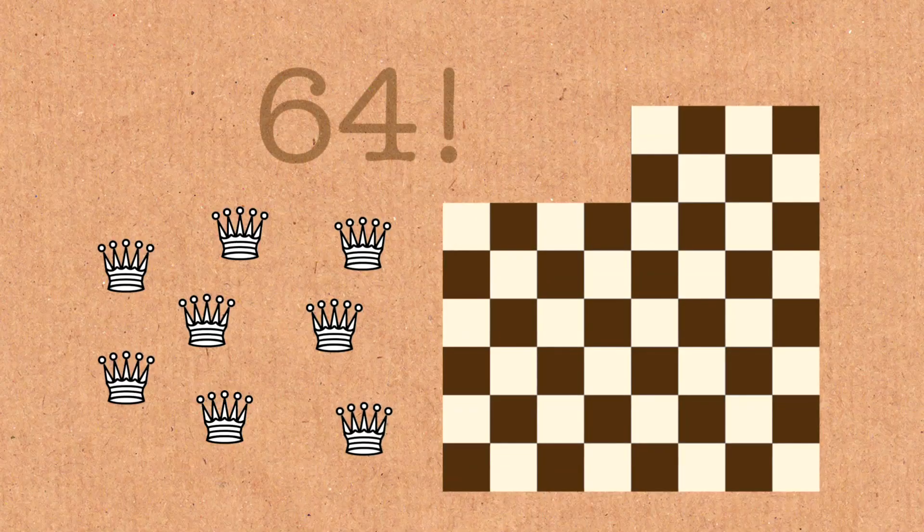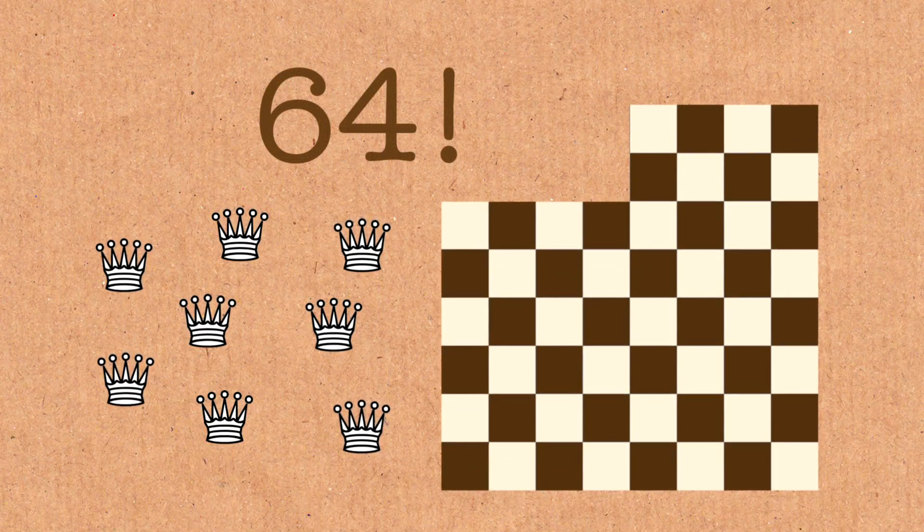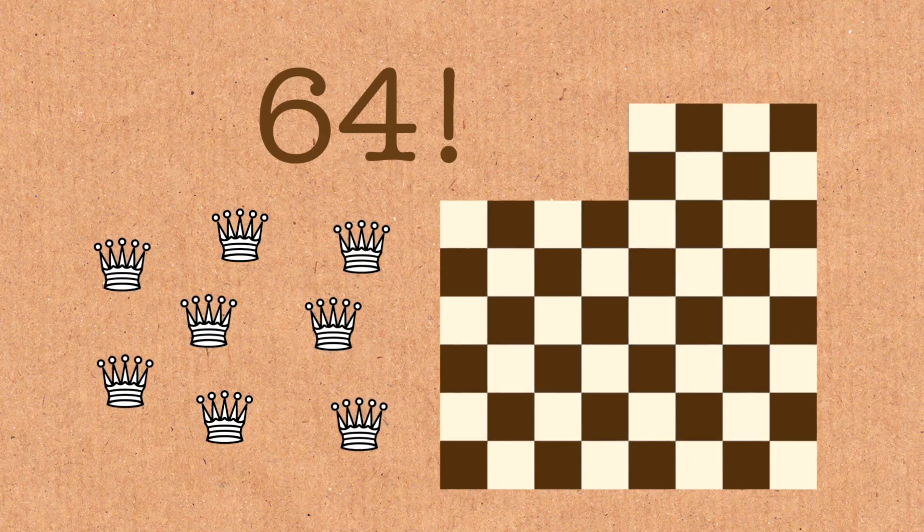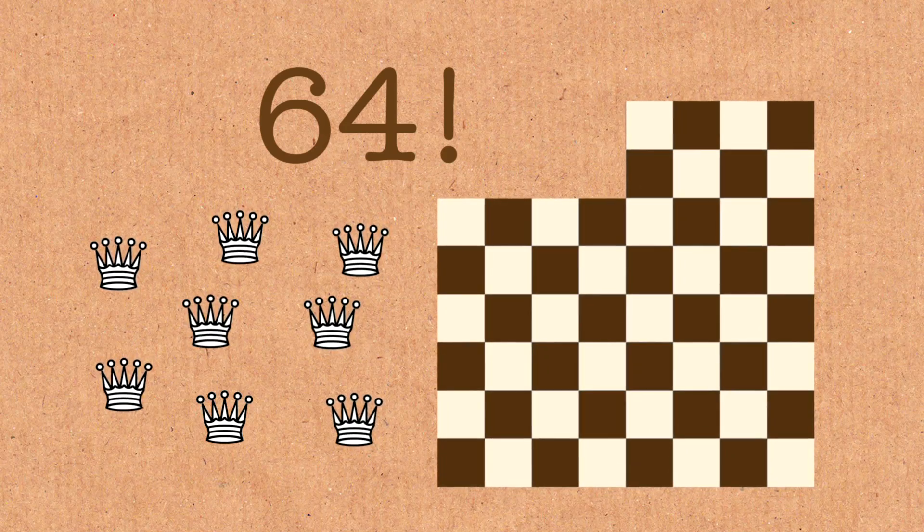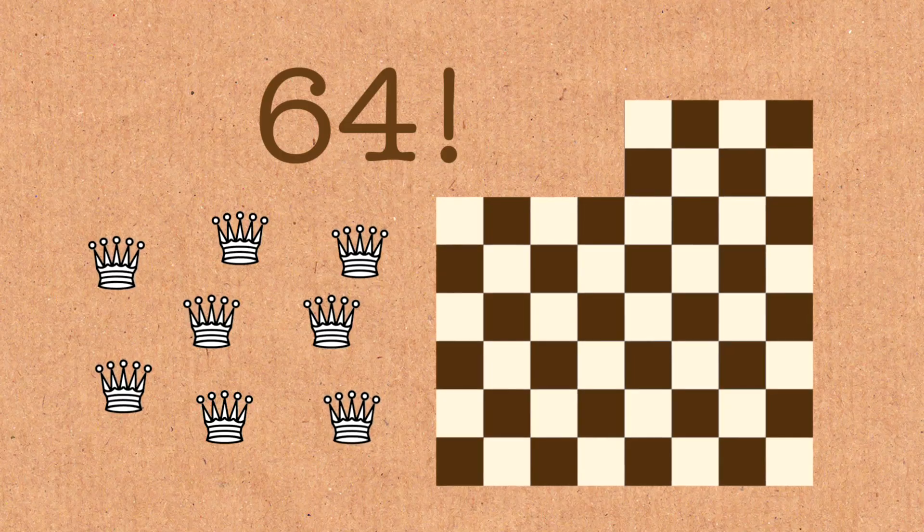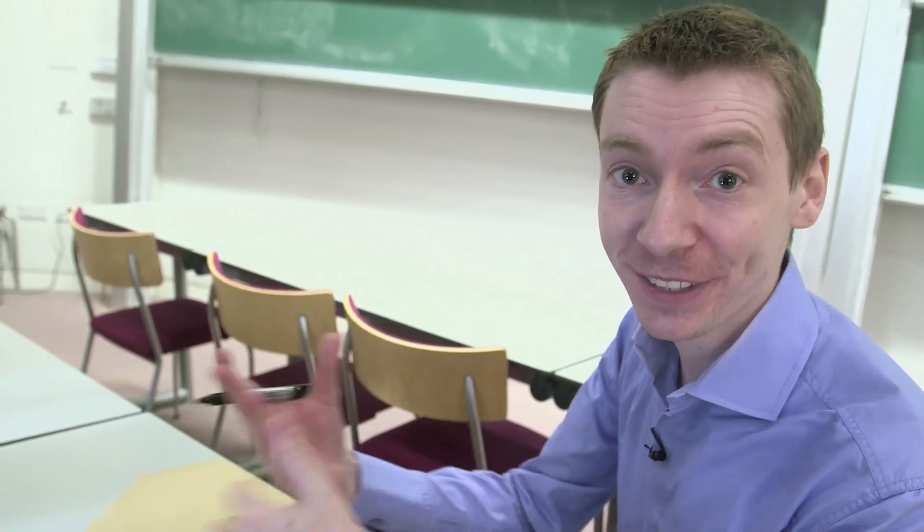If you have 64 objects, there are 64 factorial ways to do that, which is 64 times 63 times 62 times 61, all the way down to 1. So there are 64 objects, 8 queens and 56 blanks.